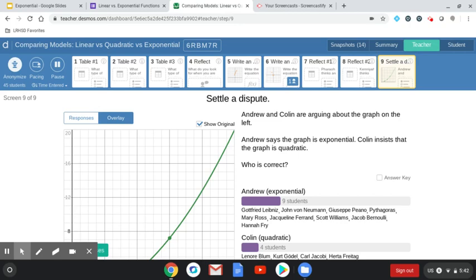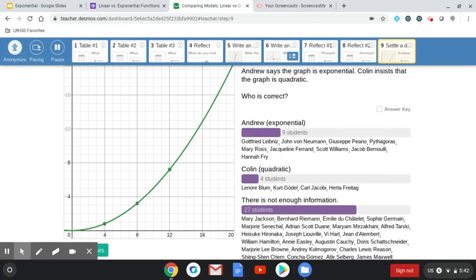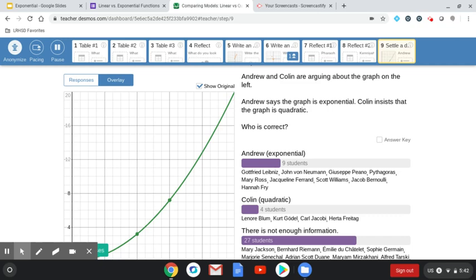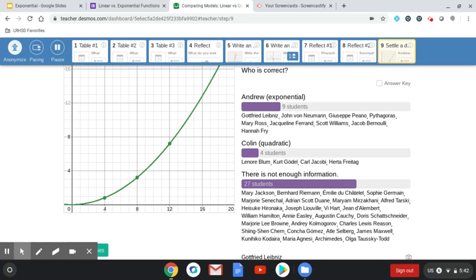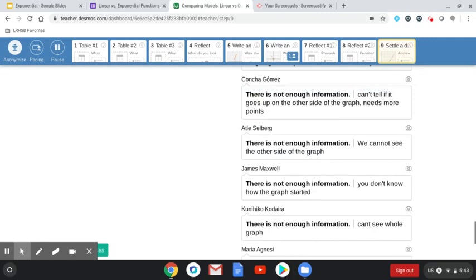And then our last conversation about last week's assignments is this argument between Andrew and Colin. If you're in class seven, you know who I'm talking about, but we've got this graph and we're only really given one quadrant of it. And Andrew's saying it's exponential, Colin is insisting that it's quadratic. So your job was to figure out which student was correct. So again, your responses were kind of all over the place. A lot of you said that there was not enough information, and then nine said exponential, four said quadratic. So if we actually check to see who was right, those of you that said quadratic were actually correct. So even though Colin posted on the Google classroom that he did not appreciate the last Desmos problem involving his name, I actually made him be the correct one.